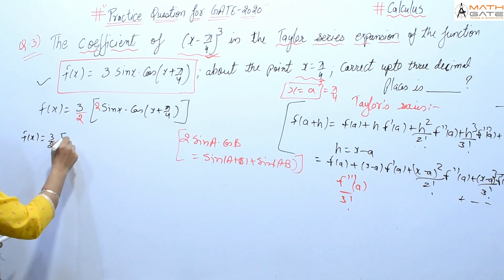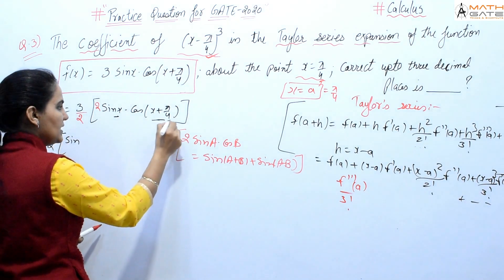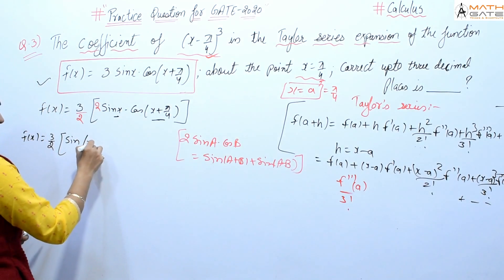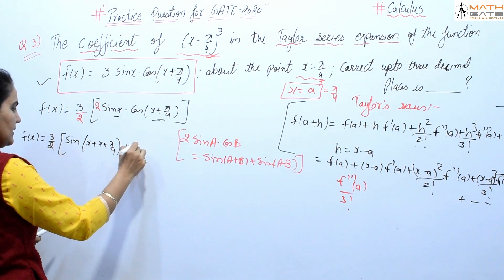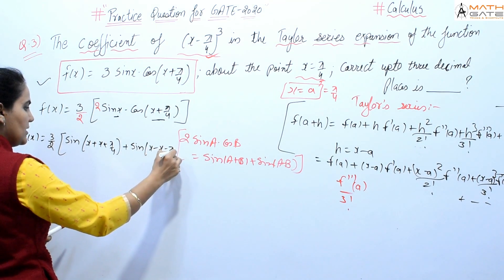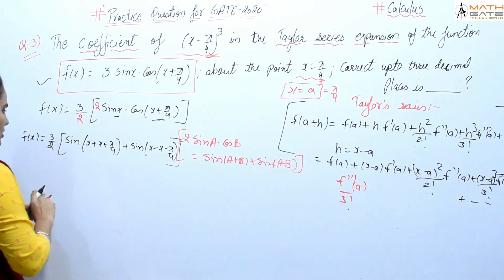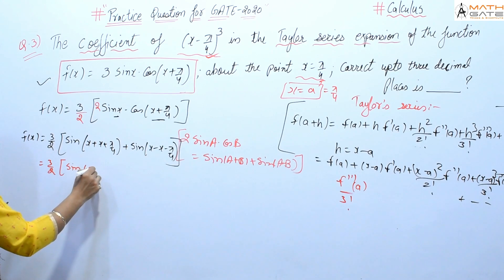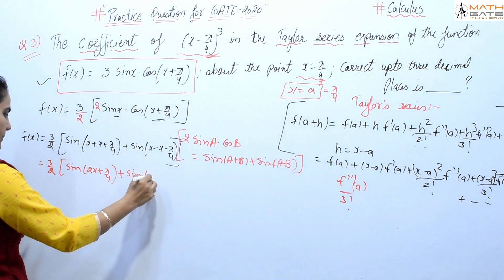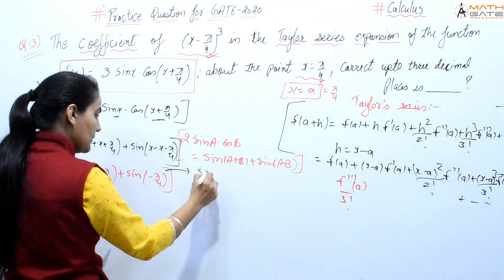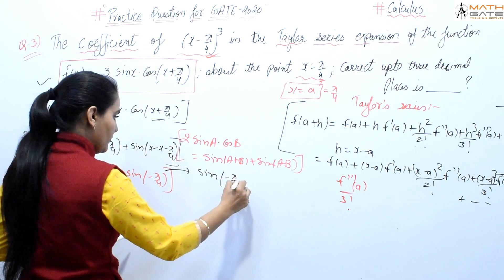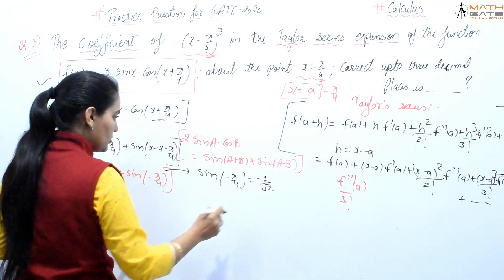So f(x) = (3/2)[sin(x + x + π/4) + sin(x - x - π/4)] = (3/2)[sin(2x + π/4) + sin(-π/4)]. Since sin(-π/4) = -1/√2, we get f(x) = (3/2)sin(2x + π/4) - 3/(2√2).